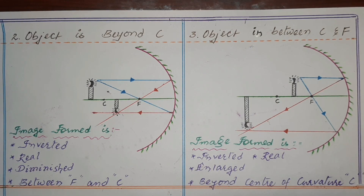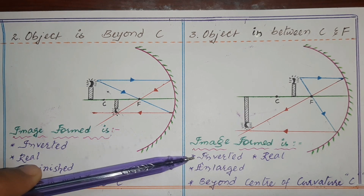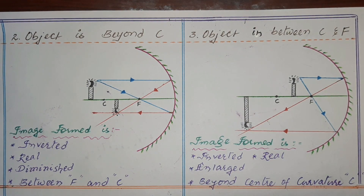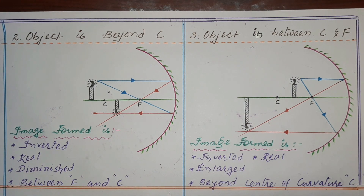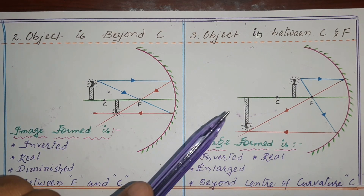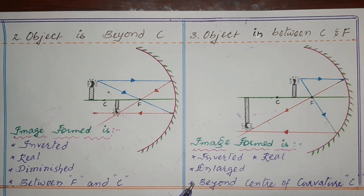The characteristics of the image formed when the object is between F and C: the image is inverted and real — as seen in the ray diagram, it is inverted, and if you keep a screen there you can store the image. It is enlarged — bigger than the object. And it is formed beyond the center of curvature. These four points are necessary to write in the exam.